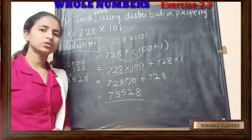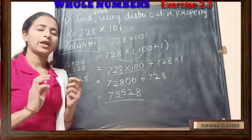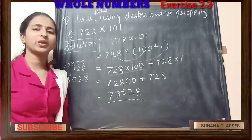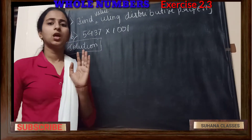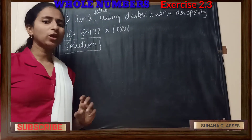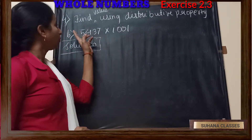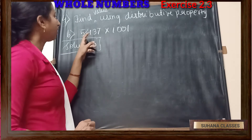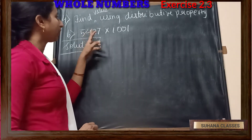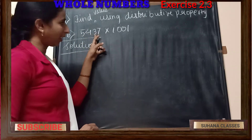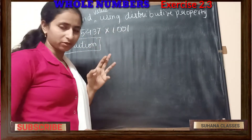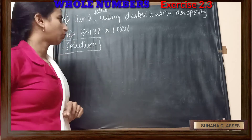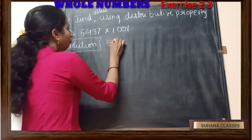Hope students have understood this question. Once you have understood it, start solving on your own. Our part B question is: we have to find the value of 5437 into 1001, using distributive property. So let's do it.